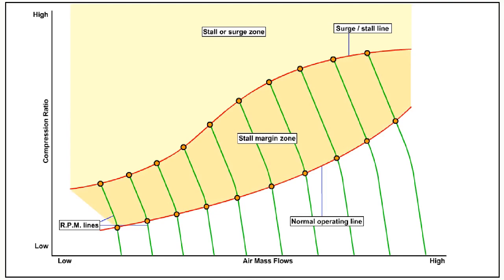There is a zone between the stall surge line and the normal operating line which is called the stall margin zone. This zone allows for the compressor efficiency reducing throughout its working life and the inevitable fluctuations which occur in the atmosphere and in the engine fuel system management.